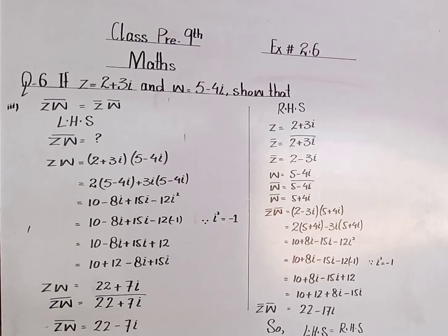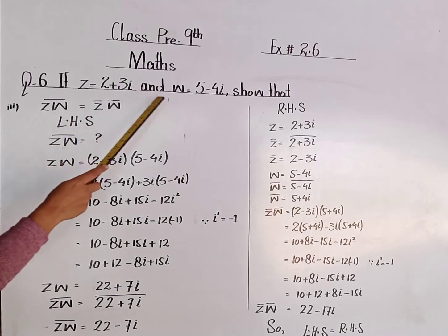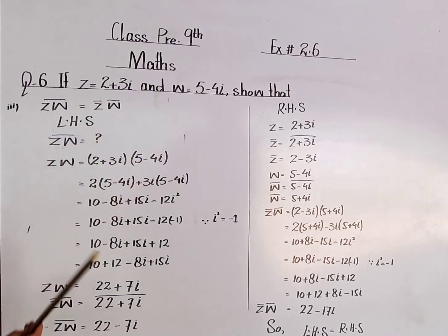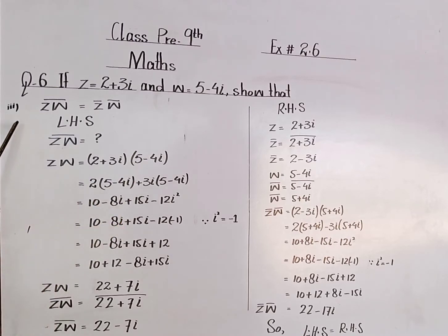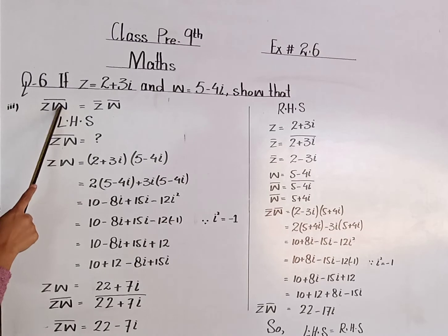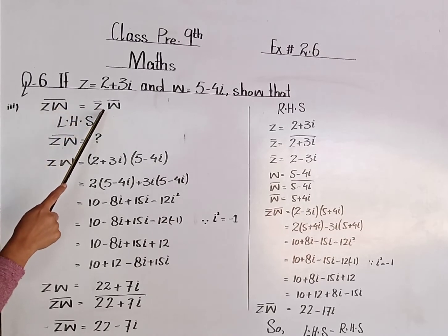Assalamualaikum students. This video lecture is for P9 class, subject maths, Exercise 2.6, Question 6: if z is equal to 2 plus 3 iota and w is equal to 5 minus 4 iota, then show that. Today we will start part number 3, and its third part is: conjugate of z into w is equal to conjugate of z into conjugate of w.